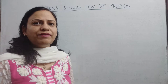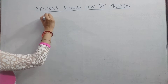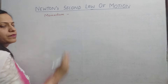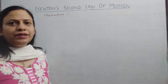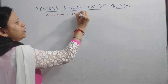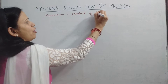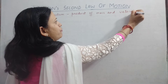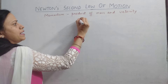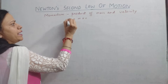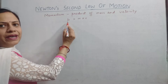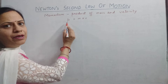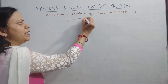The first term we are going to talk about is momentum. Momentum is the product of mass and velocity. Whenever we multiply mass with velocity, we get the momentum. The symbol for momentum is small p, and mathematically it can be represented as p = m × v.